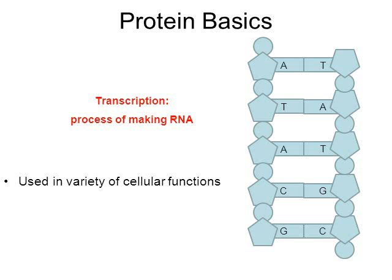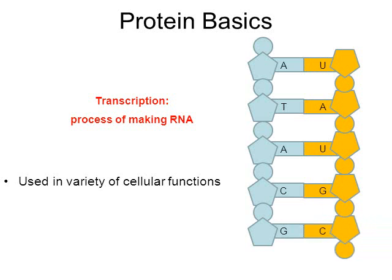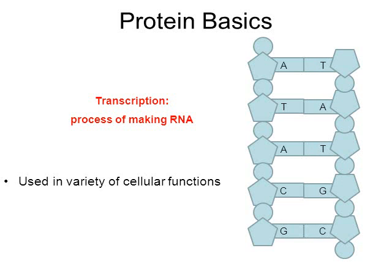Another example of a cell process that requires proteins is called transcription. In this process, RNA is created. There are special proteins that will break apart a DNA molecule, and then RNA molecules will attach to the DNA. Once that happens, the RNA will break away. There are also special proteins that will join the DNA back together. So there are all kinds of needs for proteins.